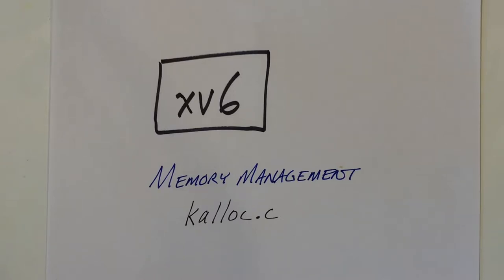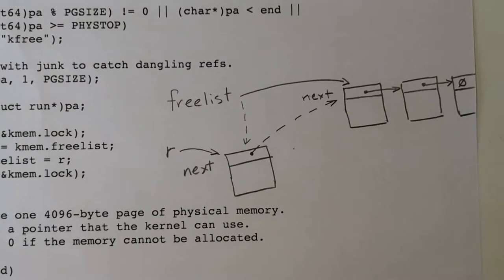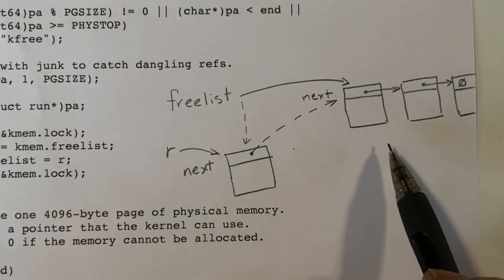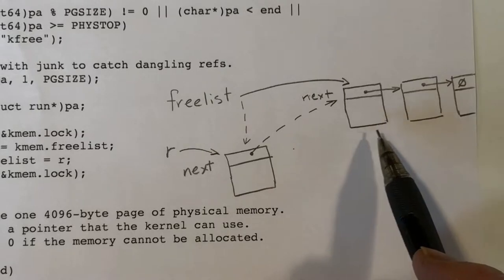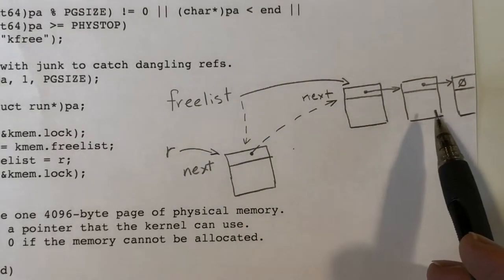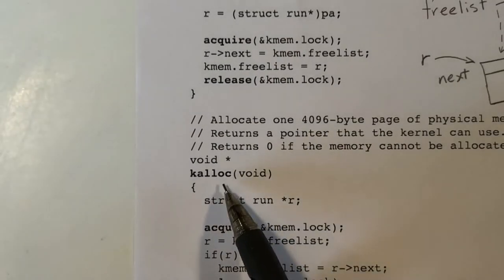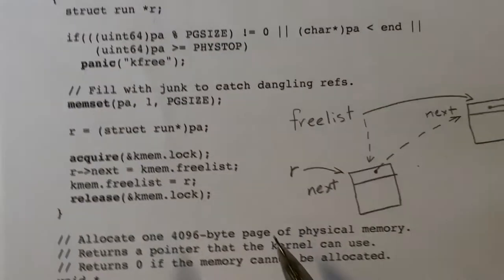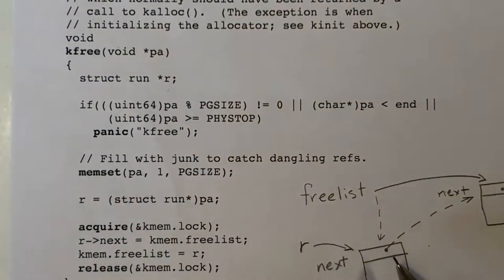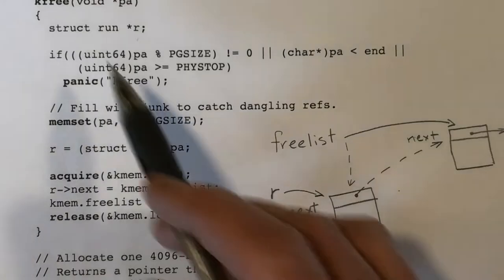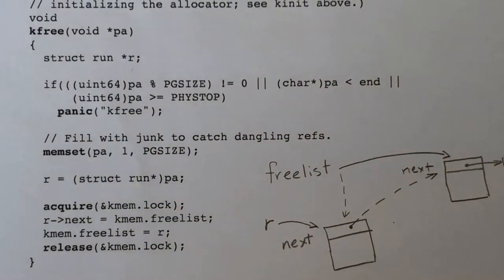This video is part of a series on the XV6 operating system kernel. In this video I'm going to look at memory management and how the XV6 kernel manages free memory. It's pretty straightforward and simple. All memory management is in terms of 4k blocks, or pages. Four kilobyte pages are maintained on a free list. We have two important functions, kalloc and kfree, which take things off the free list or add a free block back to the free list respectively.